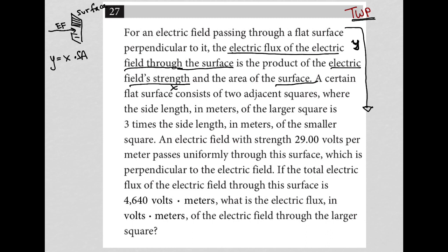The next sentence says, a certain flat surface consists of two adjacent squares, where the side length in meters of the larger square is three times the side length in meters of the smaller square. Okay, well, I can draw that. So I have small square. I have larger square. And it says that the side lengths of the larger square are three times the side lengths of the smaller square. All right. So that's labeled. Okay.